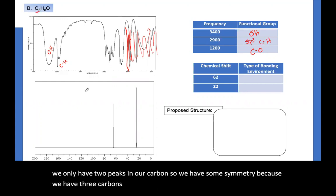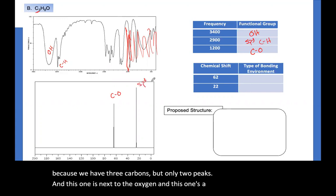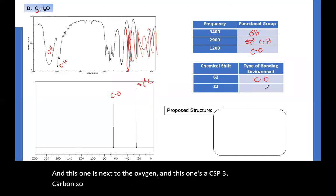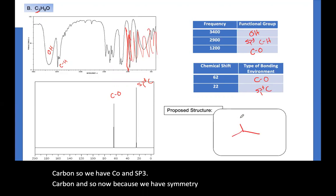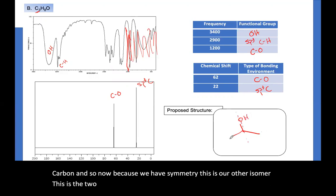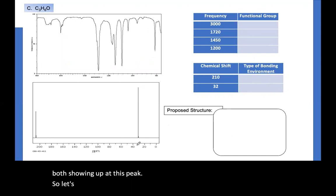And now we only have two peaks in our carbons. We have some symmetry because we have three carbons, but only two peaks. And this one is next to the oxygen. And this one's the SP3 carbon. So we have CO and SP3 carbon. And so now because we have symmetry, this is our other isomer. This is the two propanol with the symmetry where the two methyls here are both showing up at this peak.